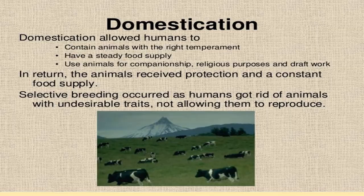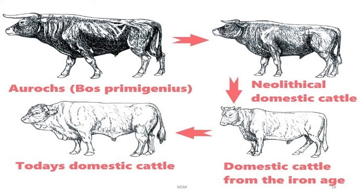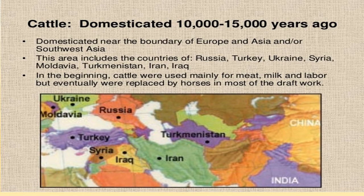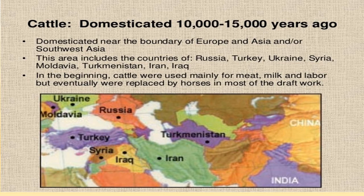We have done a lot of artificial breeding to produce the different types of cows that we see now. It is believed that domestication first happened roughly 10,000 to 15,000 years ago, and cattle were used mainly for meat, milk and labor. After some time, cattle were replaced by horses to do most of the draft work, though we still do have breeds of cattle meant only for that.